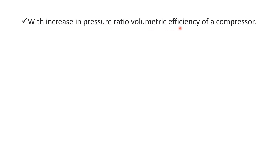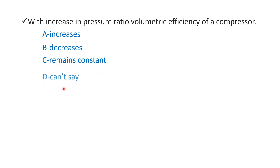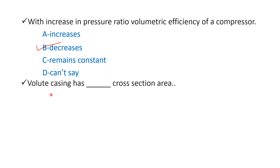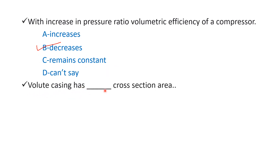Next question: with increase in pressure ratio, the volumetric efficiency of a compressor — Option A: increases, Option B: decreases, Option C: remains constant, Option D: can't say. The right answer is Option B — decreases. Jab bhi pressure ratio increase kiya jaata hai, compressor ki volumetric efficiency decrease ho jaati hai.